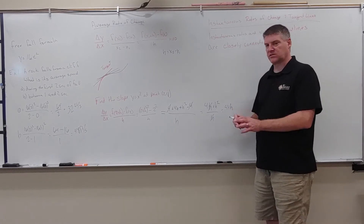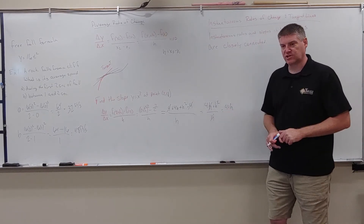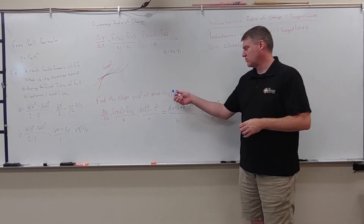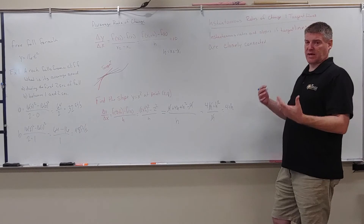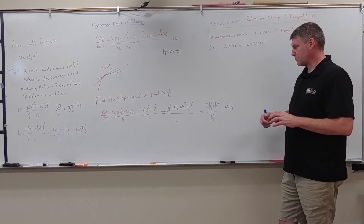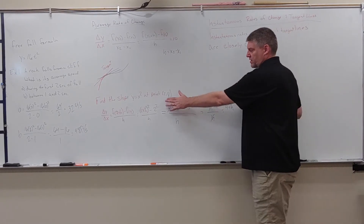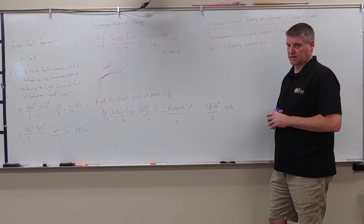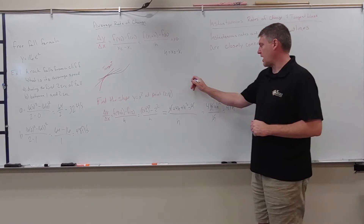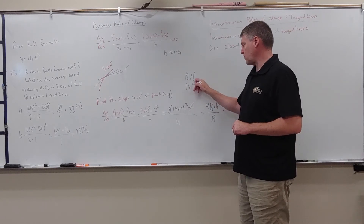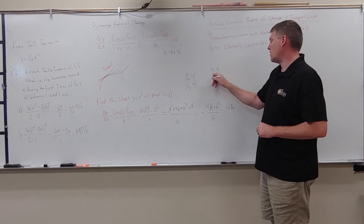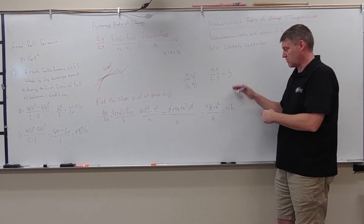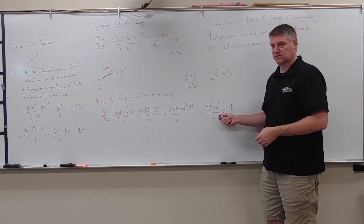The slope of the secant line is 4 plus h. So whatever my difference is — if I used h equals 1, going from point (2,4) to (3,9), the slope is 9 minus 4 over 3 minus 2 equals 5, which matches 4 plus 1 equals 5. If I went to 2.5, my slope would be 4.5. This is a shortcut for finding the slope if you know the difference between your two points.